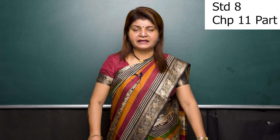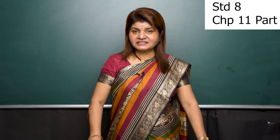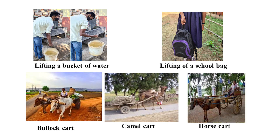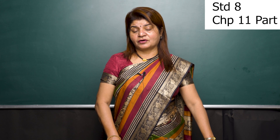In contact forces, the first is muscular force. When we lift a bucket of water or a school bag, we are using our muscular force — caused by the action of our muscles. Animals like bullocks, camels, and horses also use muscular force to pull carts and perform agricultural activities. Muscular force can only be applied when in contact with the body.